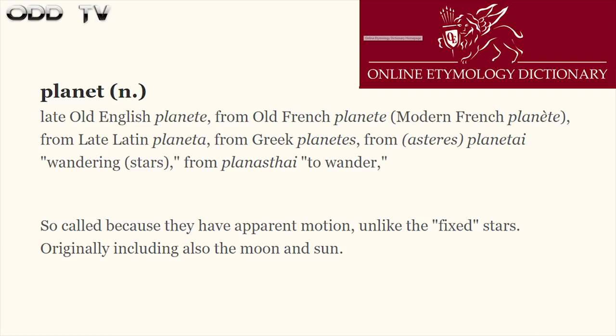Now let's talk about planets. People always ask me, why is Earth the only planet that's flat? It's simple — it's because Earth is not a planet. Planets were known to the ancients as wandering stars. From the online etymology dictionary: 'wandering stars' — so-called because they have apparent motion unlike the fixed stars. Originally included also the sun and moon. So they move in a completely different way than the regular uniform stars. And Earth was originally not included, because it's not a planet — it's a plane.